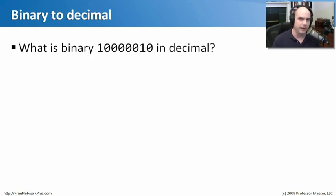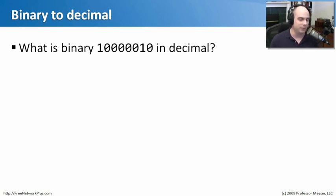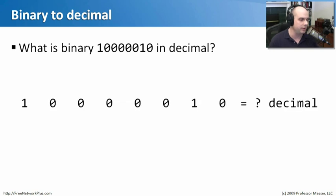One good way to learn binary math is to jump right into it. What is binary 10000010 in decimal? If you've never done any binary math before, you may be wondering how to convert these strings of ones and zeros into a decimal number. We work in decimal every day and rarely work in binary, but the conversion process is extremely easy. First, write down that binary number — 1, 0, 0, 0, 0, 0, 1, 0 — strung out on the screen.